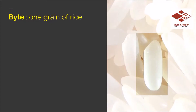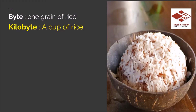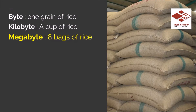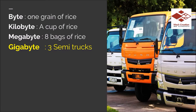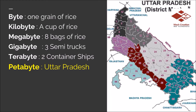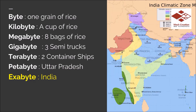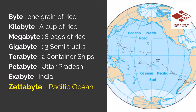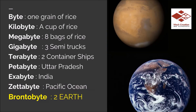Example se samajhte hain ki Big Data hai kya. Let's consider ki 1 byte ki value 1 grain of rice ke equal hai. Isi tarah se 1 kilobyte ki value 1 rice ball ke equal consider karte hain. Isi reference se, 1 megabyte equals 8 bags of rice, aur 1 gigabyte equals 3 medium-size trucks. 1 terabyte ko 2 container ships ke equal consider karte hain. In the same way, 1 petabyte is equal to the population of Uttar Pradesh, and 1 exabyte contains a value equal to the population of India. Similarly, 1 zettabyte will contain a value equal to the Pacific Ocean, and last but not least, brontobytes which is equal to 2 Earth-size rice balls.